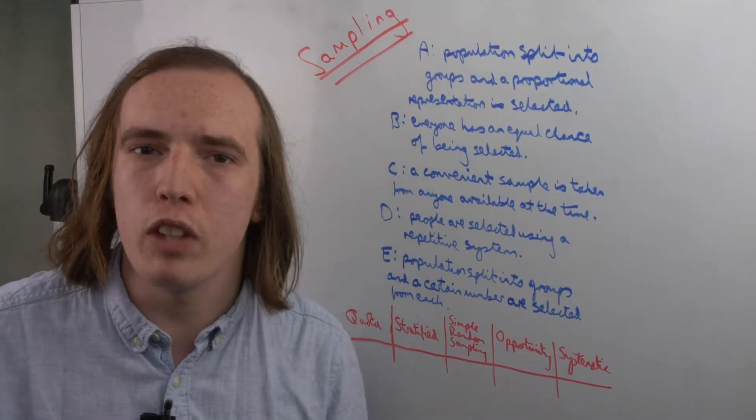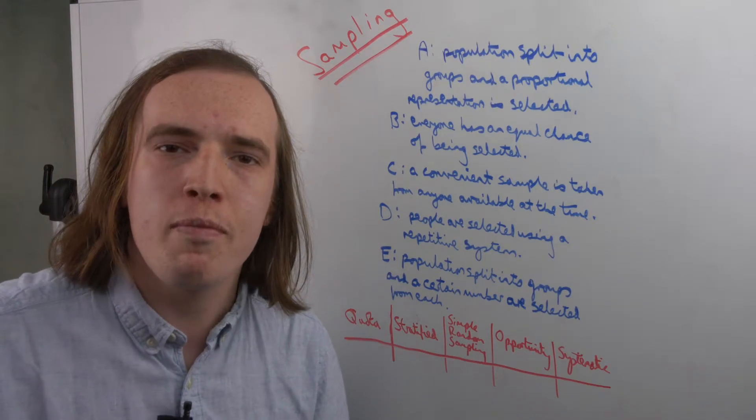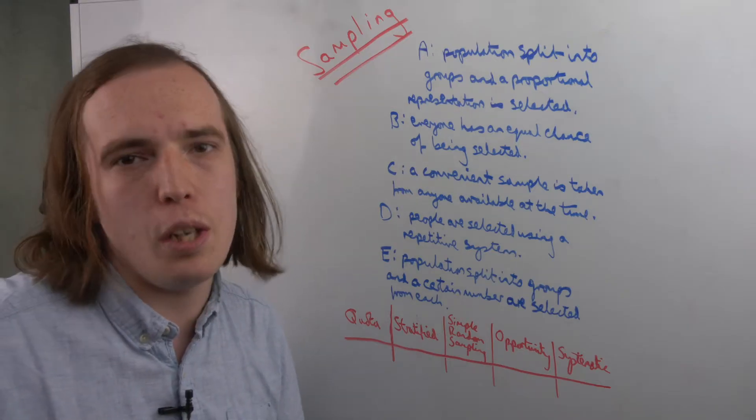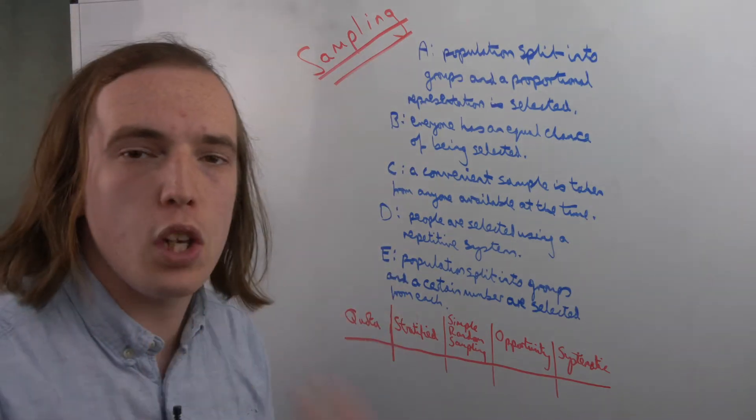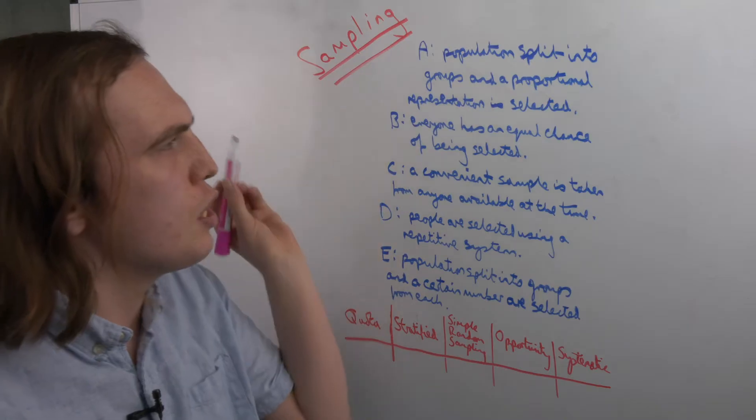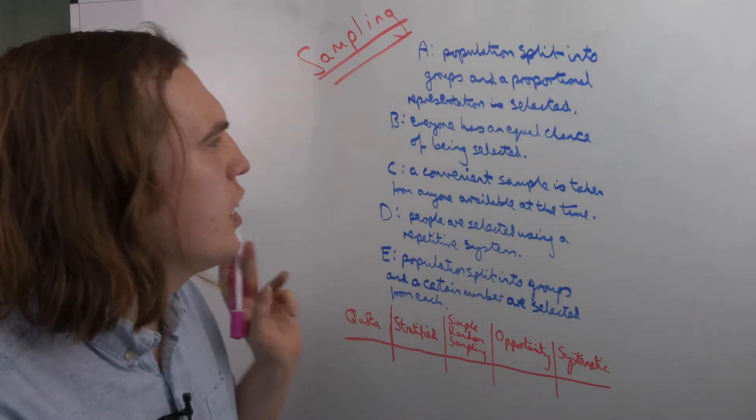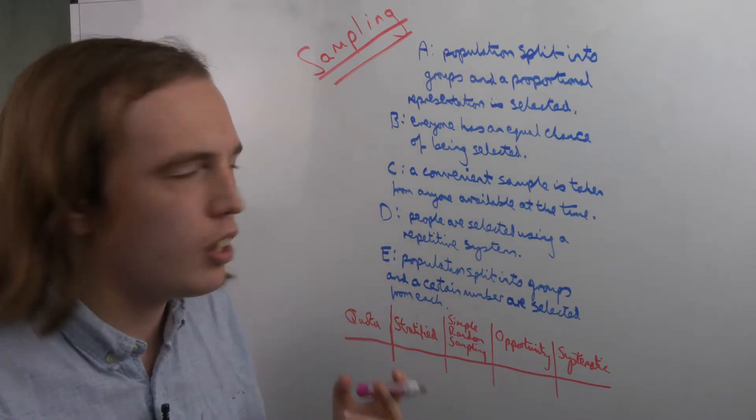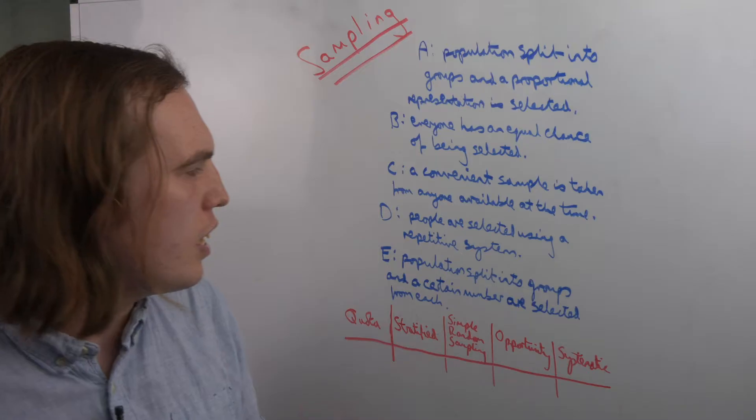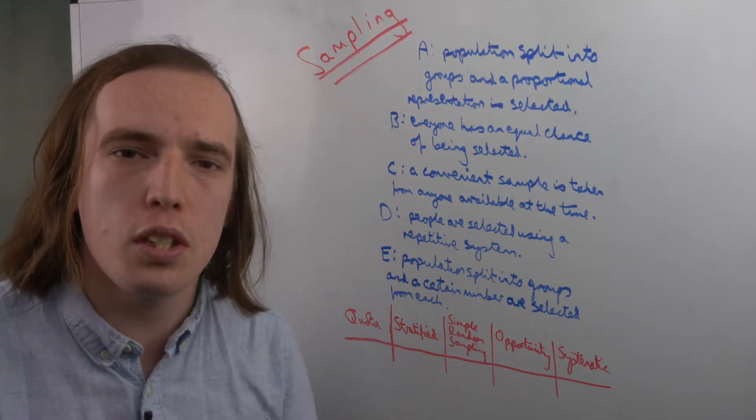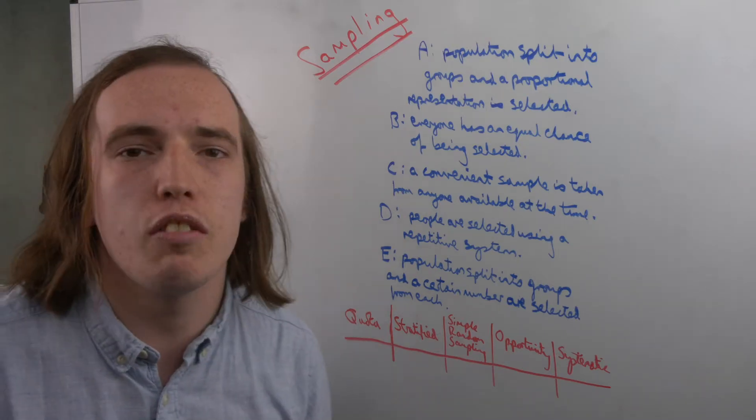Now, those were some potentially long definitions, and you won't often have to actually define them in your answers. It's just a matter of understanding the concepts. That being said, this is still a rather wordy subject. So we're going to have to do a bit more reading. So we're given here five examples. A is that the population is split into groups and a proportional representation is selected. B is that everyone has an equal chance of being selected. C is a convenient sample is taken from anyone available at the time. D is that people are selected using a repetitive system. And E is the population again is split into groups, but a certain number are then selected from each.